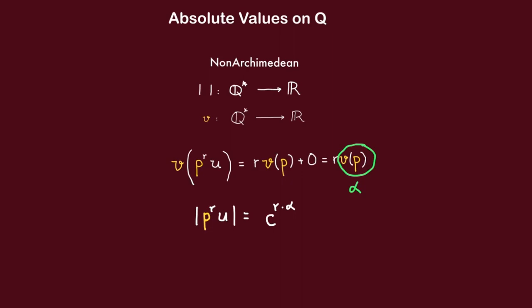Then our absolute value on Q star is given by the absolute value of P to the r times u must be equal to C to the r alpha for some constant C between 0 and 1. That is clearly equivalent to the P-adic absolute value.